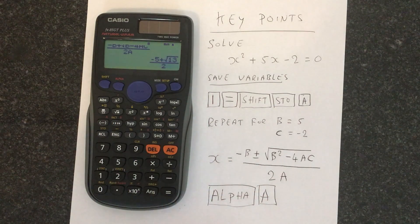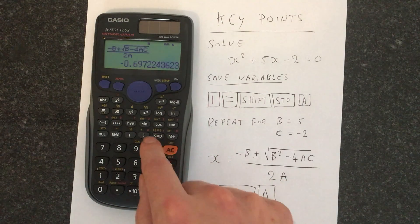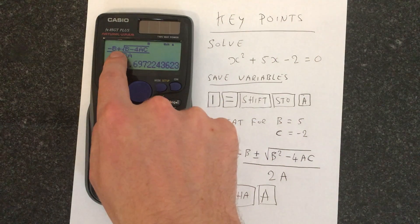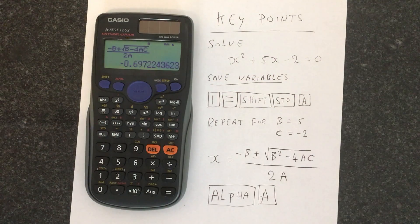And you press S to D, and that is one of our solutions. If we want the second solution, all you do is change that plus to a minus, and you'll get your answer.